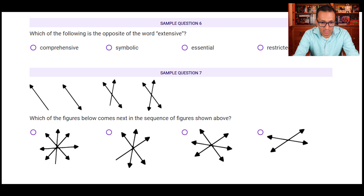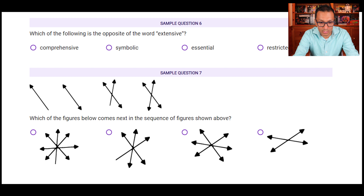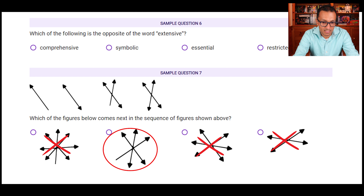Sample question seven: which figure comes next in the sequence? In figure one there is one line and one arrow symbol. In figure two, two arrow symbols are added. In figure three, one more arrow symbol and one extra line are added. Each step adds one arrow symbol — from figure one to four there are one to four arrows respectively. So we need a shape with five arrow symbols. D has four — out. C has six — out. A has seven — out. Only B has five arrow symbols, so B is the answer.